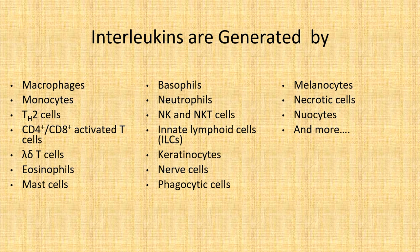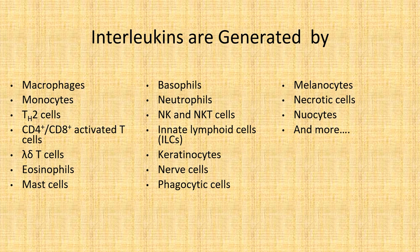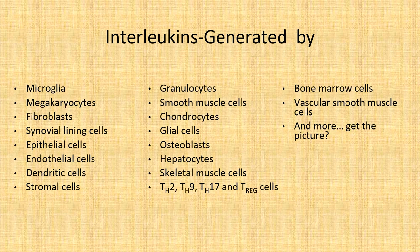Let's look at the cells that are generated by and that generate interleukins. Remember, the initial definition was trafficking between leukocytes, implying they are generated by leukocytes. But here are some of the cells that actually generate interleukins. Gamma delta cells, for example, live at the margin between innate and adaptive immunity. Nuocytes have to do with innate immunity alone and are important in the generation of Th2 responses.